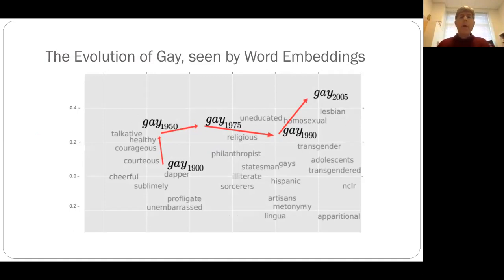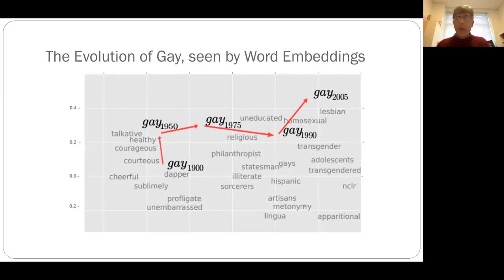One thing that's interesting is that the meaning of words changes with time. The word 'gay' in my lifetime changed from the primary sense of being happy to the primary sense of dealing with homosexuality. The question is: is there a way we can analyze a text corpus and figure out which words are changing their meaning? Word embeddings provide a way to do this — each word's meaning is captured as a point in a hundred-dimensional space, and as a word changes, that point moves through space.